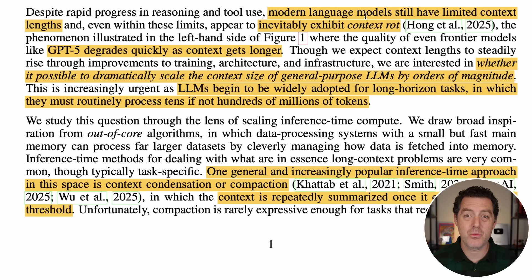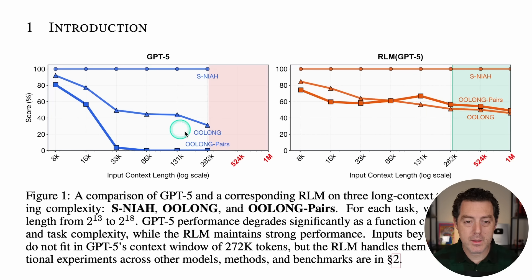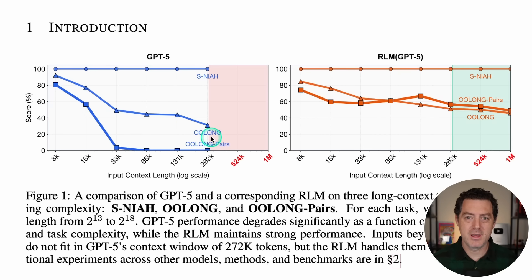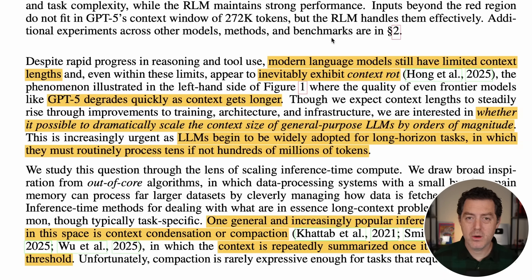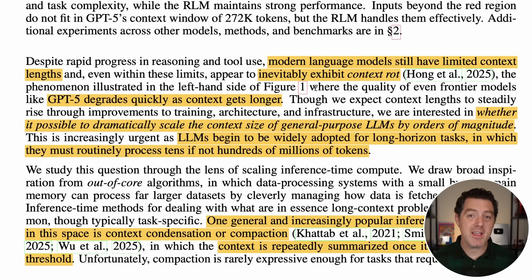This is called context rot, and it's a big problem. The MIT researchers asked themselves: can we drastically increase the size of the context window without actually changing the core model? Can we make the context window a million tokens? What about 10 million? This is going to be especially important for long horizon tasks, searching over millions of documents, and giant code bases. Having a large context window is incredibly important.